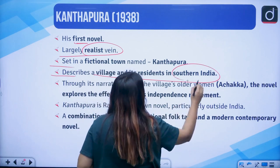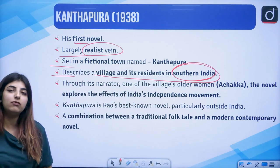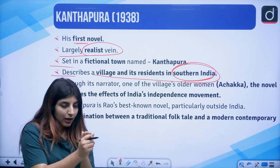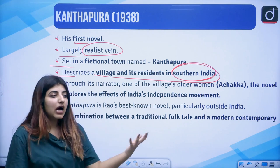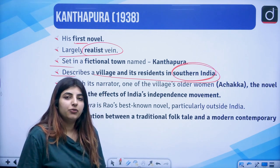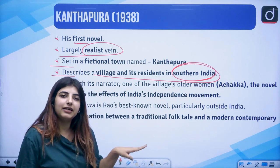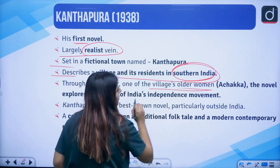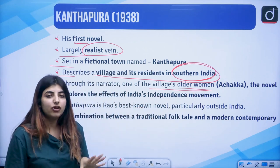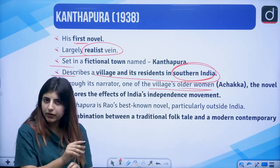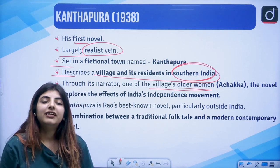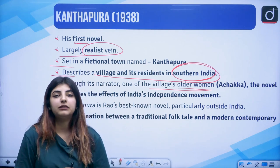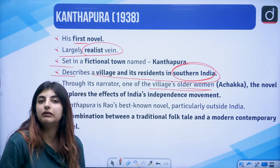Kanthapura describes a village and its residents in the southern part of India. Because he was born in Mysore, that southern Indian vibe had some influence on him — the closer you are to your community, the more it will reflect on you. Through its narrator, one of the village's older women named Achakka, the entire story is told. Achakka always talks about things in 'we' — she does not talk in first person or second person; she always talks in third person using the word 'we'.